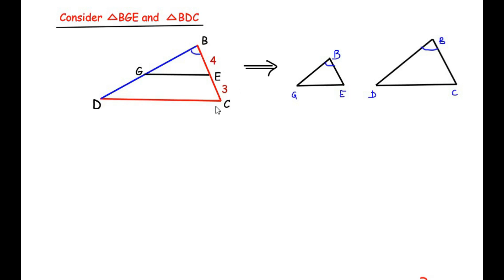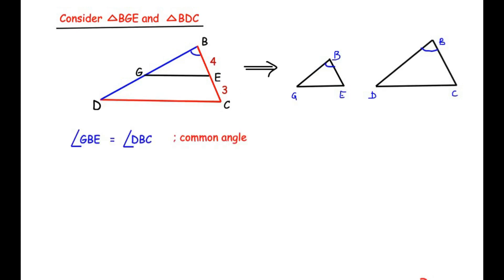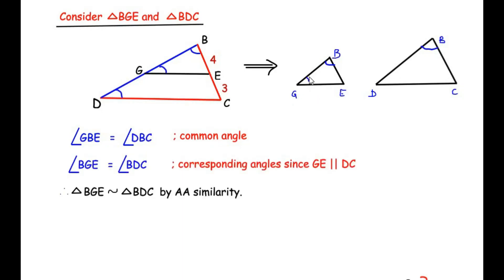Angle B from triangle BGE equals angle B from triangle BDC — it is a common angle. Next, angle BGE equals angle BDC as corresponding angles formed by parallel lines GE and DC. Since two angles are the same, triangle BGE is similar to triangle BDC by the angle-angle similarity criterion.